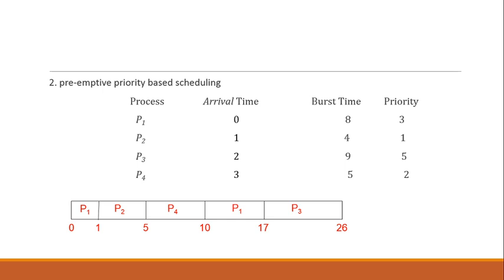Now there is one more example on preemptive priority-based scheduling. In the preemptive case, if we have executed a process for some time interval and a new process arrives with higher priority, we preempt the current process. Consider the example: P1 arrives at time 0, so we start with P1 regardless of algorithm. P1 has priority 3. We execute P1 for 1 unit, from 0 to 1. At time 1 we check if any higher-priority process has arrived.